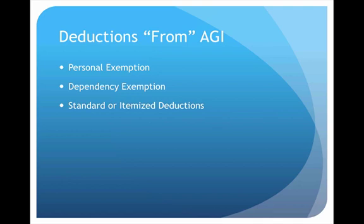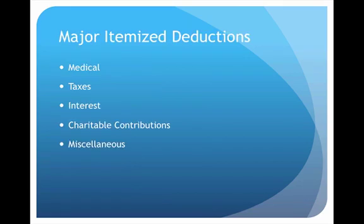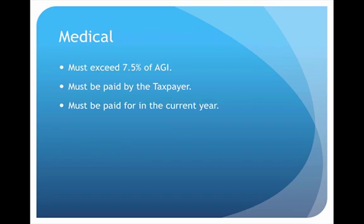If you're going to itemize, you have to come up with enough itemized deductions to exceed the standard deduction; otherwise, you won't itemize. For the rest of this lecture we'll focus on what the itemized deductions are. There are five major areas: medical, taxes, interest, charitable contributions, and miscellaneous. If you can come up with enough to exceed the standard deduction, you'll take advantage of these.